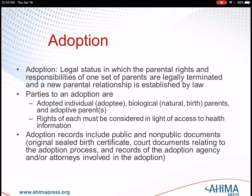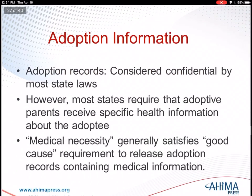On page 357, it gets into the release of information for an adopted person. A right of access exists for an adoptee's own health records, including their birth record, but with all of the information that identifies the biological parents redacted — meaning it's been removed. Until the adoptee reaches the age of majority, the right of access will belong to the adoptive parents. Once the adoptee reaches the age of majority, the right of access belongs to the adult adoptee.